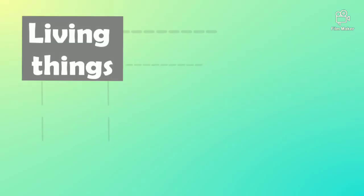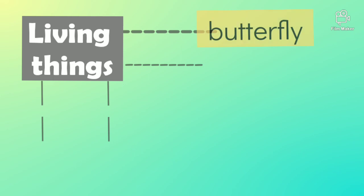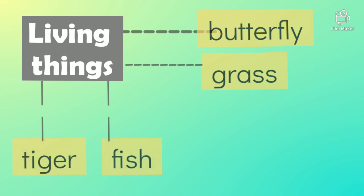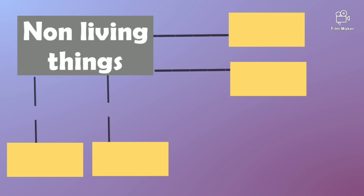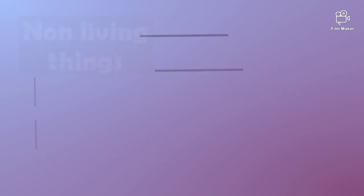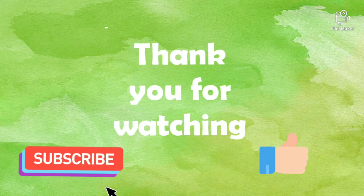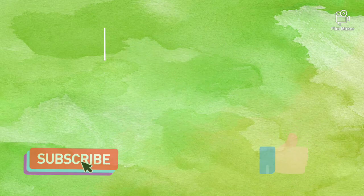Let us see some examples of living things: butterfly, grass, tiger, and fish. Can you add a few more to the list? Then do it! Now name some examples of non-living things — write them in your notebook. See you in the next video, bye!